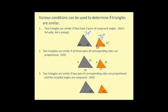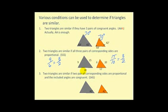Number two, two triangles are similar if all three pairs of corresponding sides are proportional. For example, if side 9 corresponds to side 6, that ratio simplifies to 3 to 2. If all other corresponding sides maintain this ratio — 15 to 10 simplifies to 3 to 2, and 18 to 12 simplifies to 3 to 2 — then we have three pairs of proportional corresponding sides, and therefore the two triangles are similar.